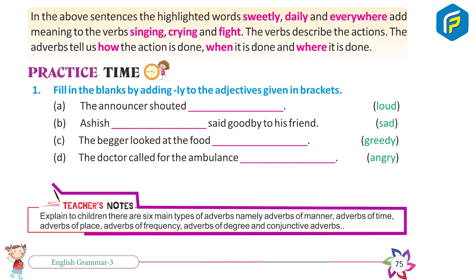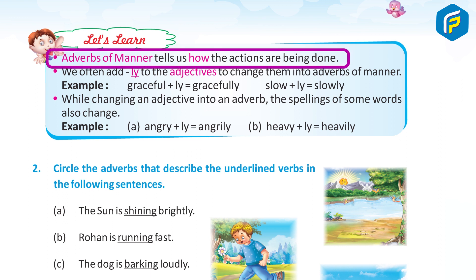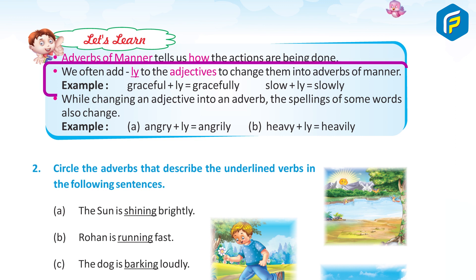Teacher's Note: Explain to children there are six main types of adverbs — namely, adverbs of manner, adverbs of time, adverbs of place, adverbs of frequency, adverbs of degree, and conjunctive adverbs. Let's learn. Adverbs of manner tell us how actions are being done. We often add -ly to the adjective to change them into adverbs of manner.